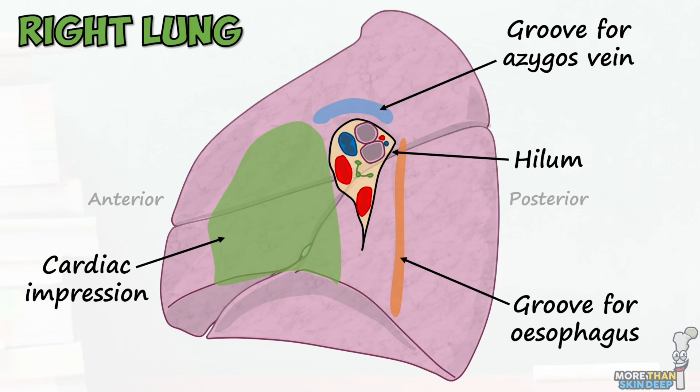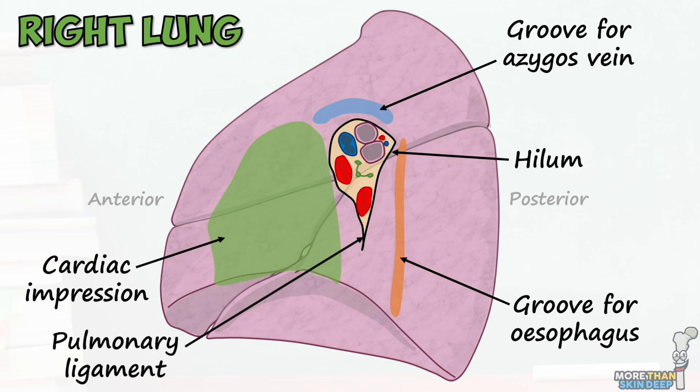The lung root is surrounded by an infolding where the parietal and visceral pleurae of the lung meet. At its inferior part, this infolding continues downwards as a narrow band of connective tissue known as the pulmonary ligament.